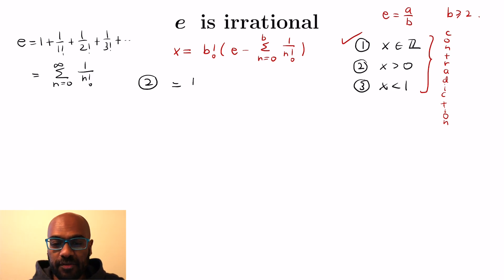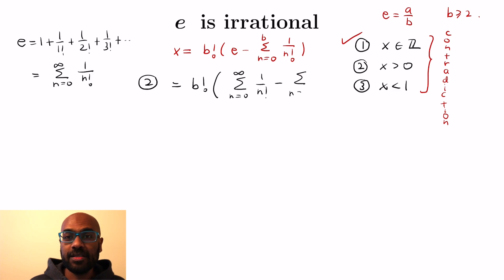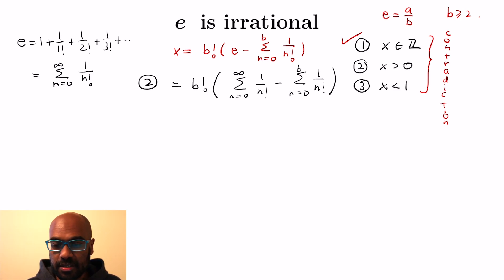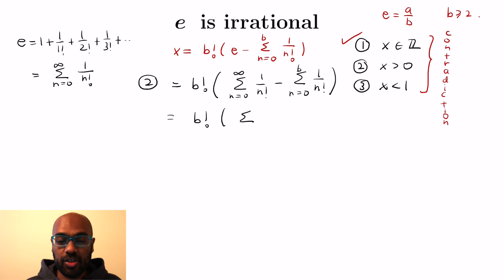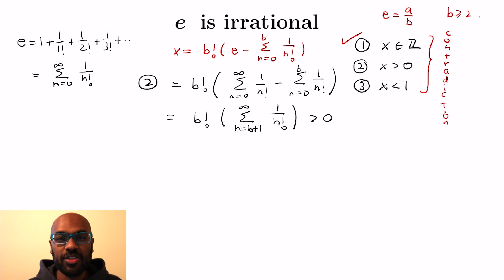Now let's prove x is positive. We use the full power series expansion of e — the sum from n equals 0 to infinity of 1 over n factorial — and subtract the truncated version, the first b plus 1 terms. What's left is b factorial times the sum from n equals b plus 1 to infinity of 1 over n factorial. All those terms are positive, so the sum is positive, and x is positive.